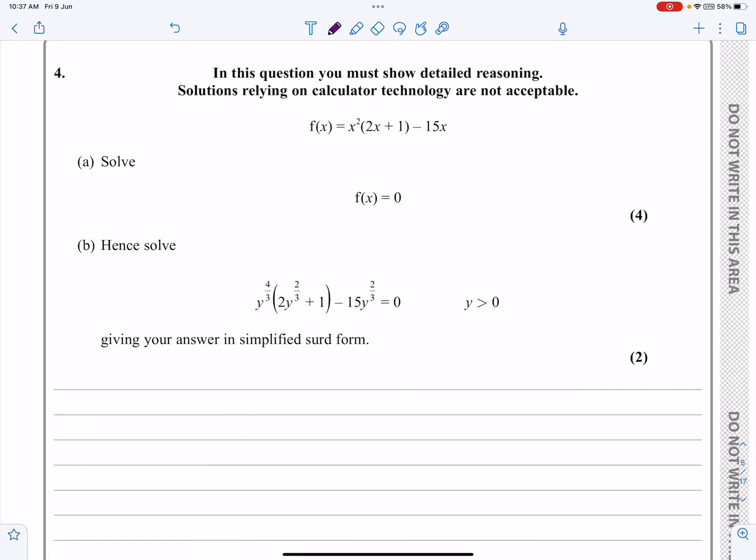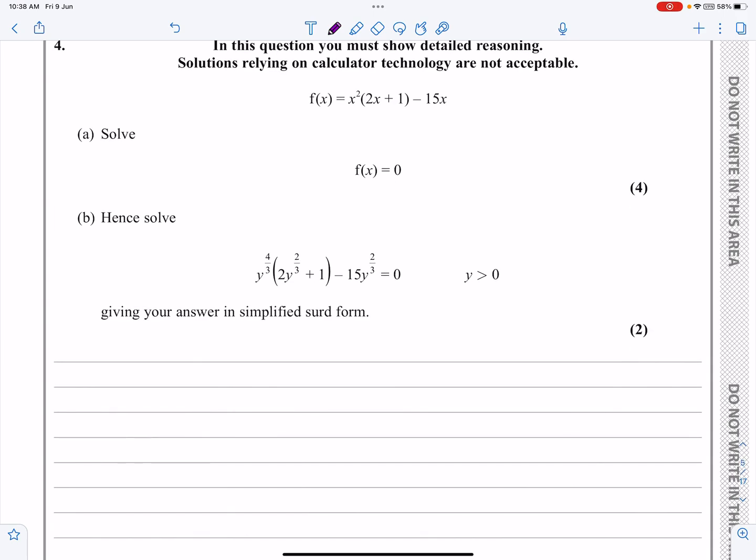Okay, this is the October 2022 P1 paper, question number four. It's a question on algebraic expressions, sort of fractional indices towards the end. It's solving a quadratic equation as well, but let's just get started and you can see what it's going to be.